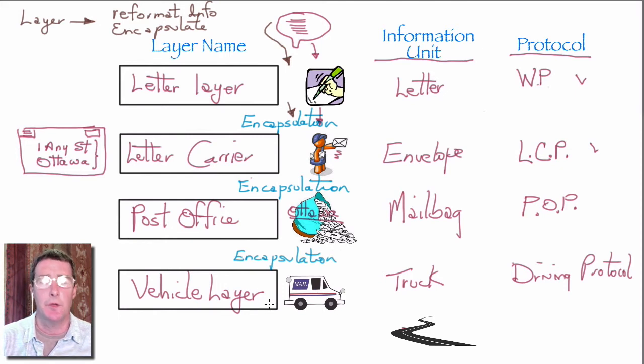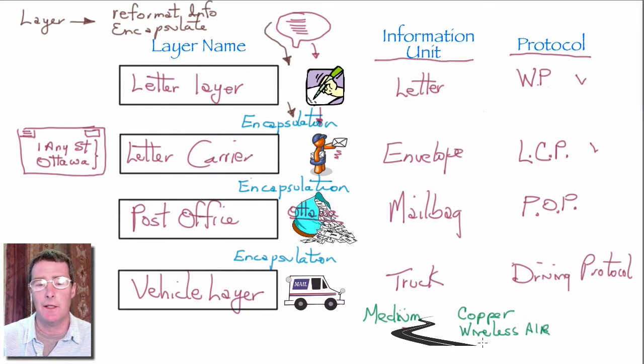The bottom layer in a communication model also interfaces with what's called the medium. This is what's going to carry the actual information. Here it's a highway. In an actual data network, we have copper cables. We could have wireless, so we actually have the air as the medium. And increasingly in cities, we start to have light in the form of fiber optic. So these are all different types of media that can carry signals.